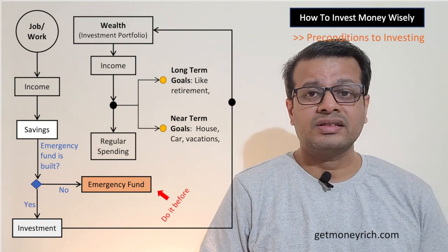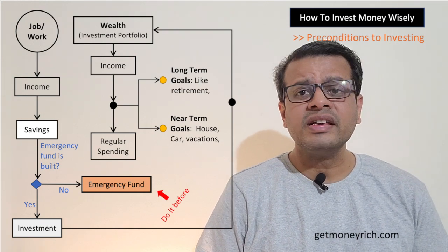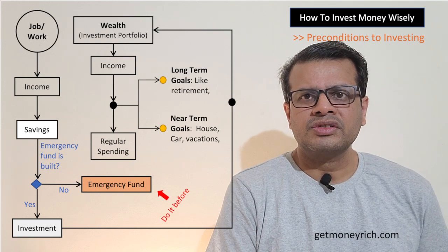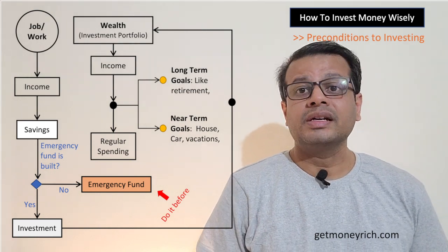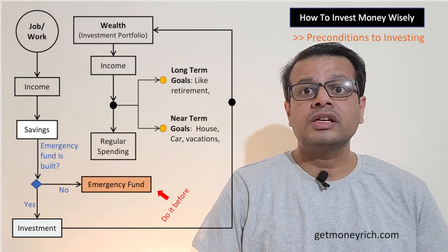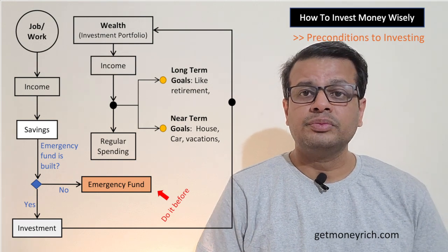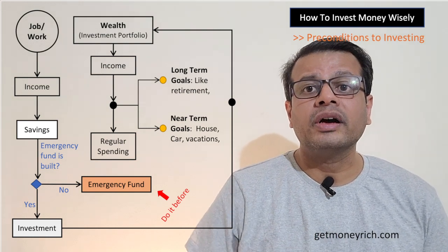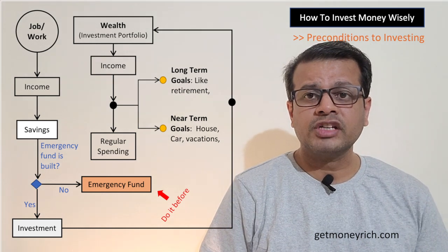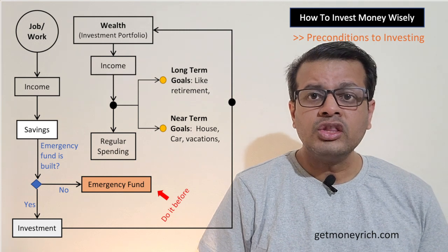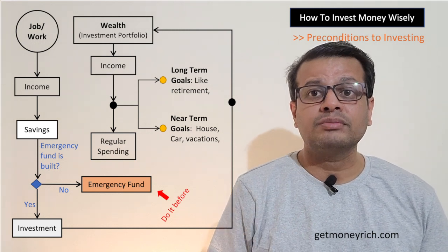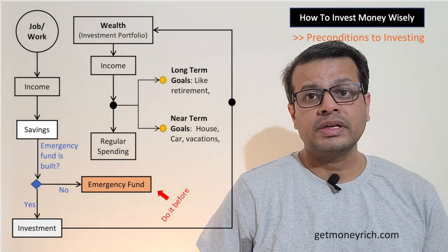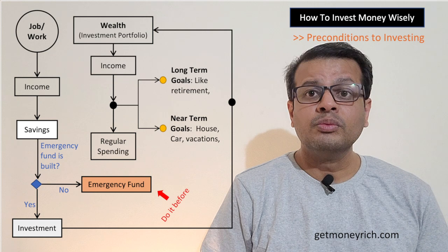Before we start investing, there are some preconditions — checkpoints that must be met. People often start investing randomly with spare money, but unless these checkpoints are cleared, we should not go all out investing. The first checkpoint is you should have enough emergency cash. In your emergency fund you must have at least six months' worth of your monthly expenses. If your monthly expense is one lakh rupees, you must have at least six lakh rupees parked in your emergency cash fund.